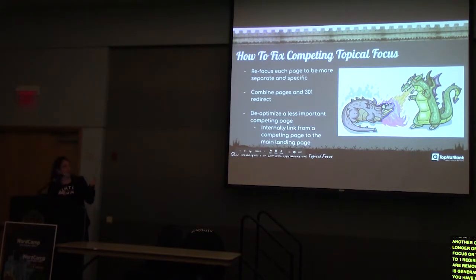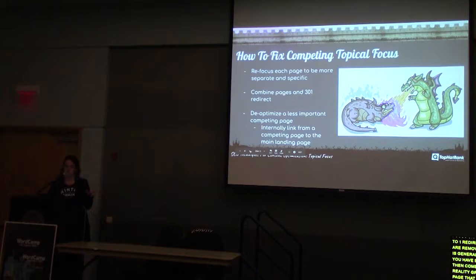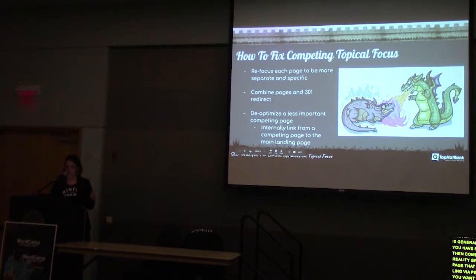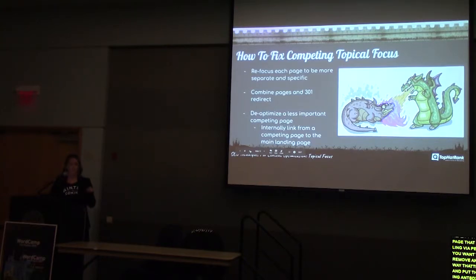To decide which page to keep and which to remove, go into your analytics, put in both competing URLs, and see which one gets more traffic. Remove the one with less traffic and redirect it. If they're getting similar traffic, go into Google Search Console, look at impressions for each page, and remove the one with fewer impressions. The other option is to de-optimize the less important page.